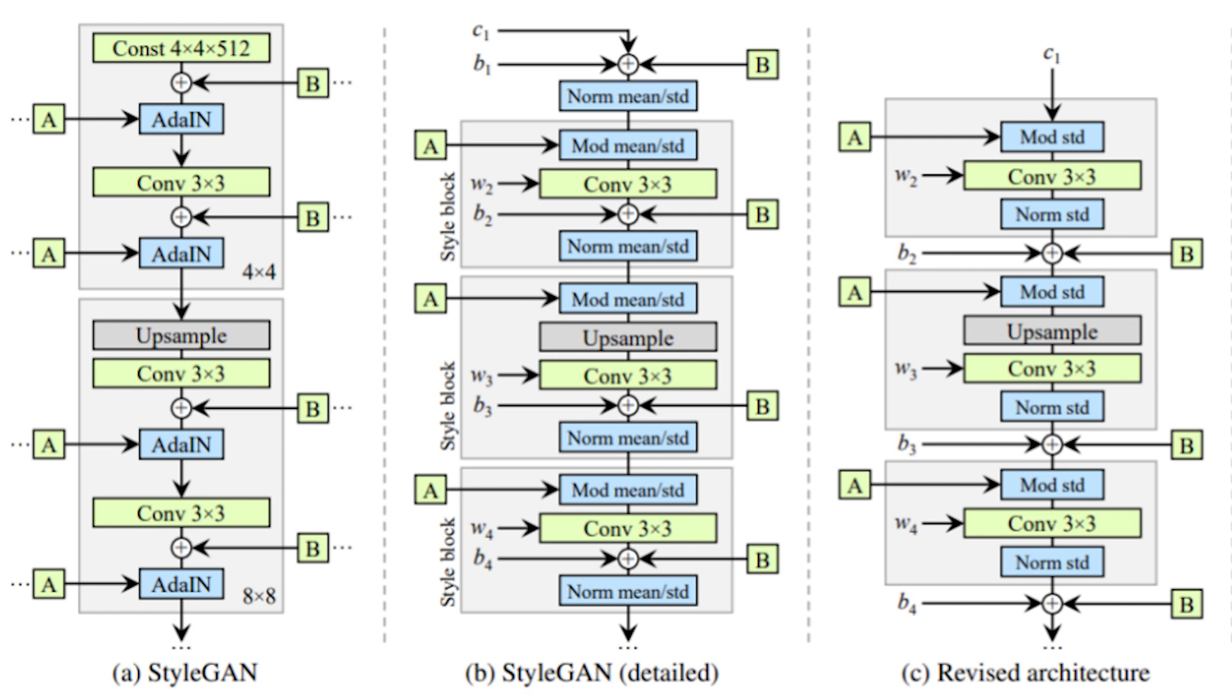Now each style block modulates the input feature map, uses convolution, then demodulates the output feature map.